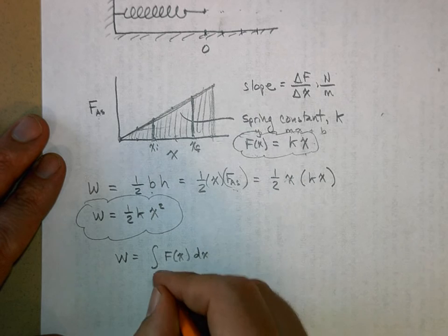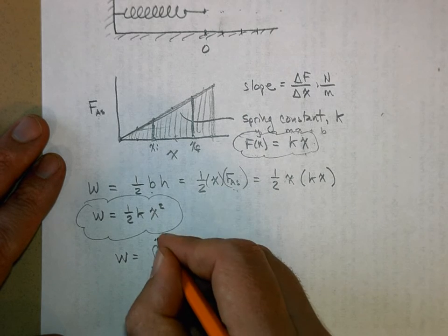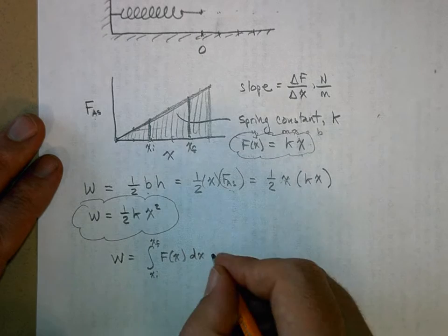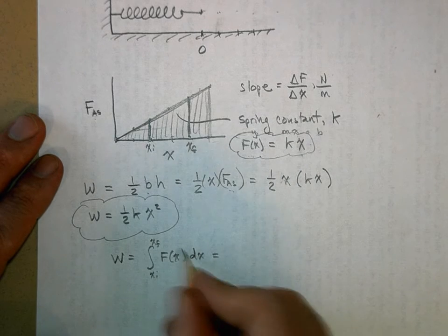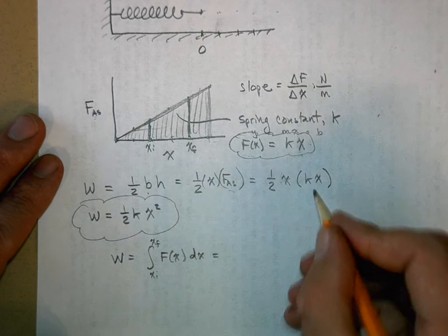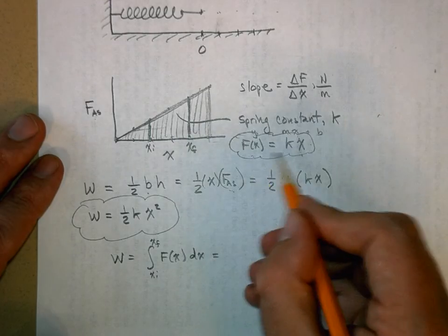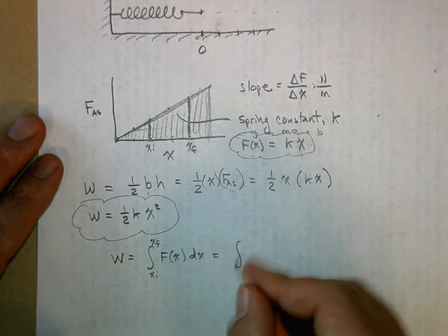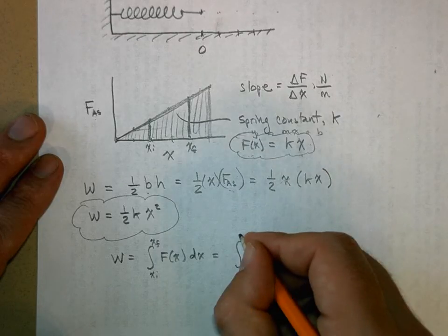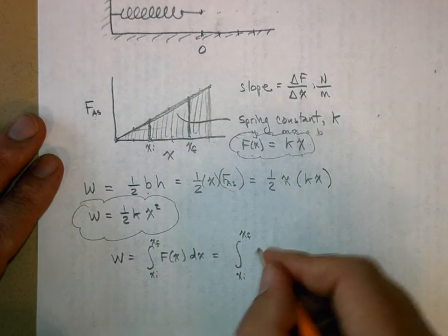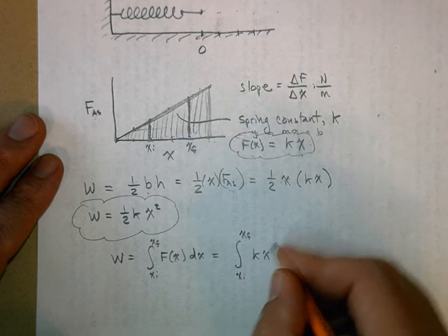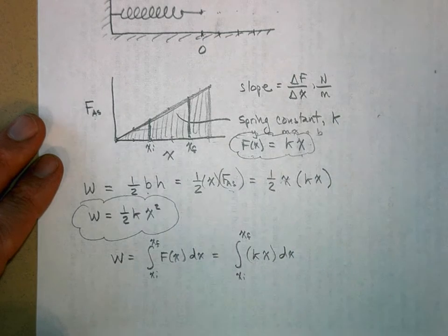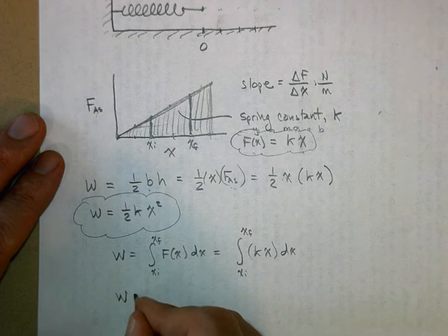Now let's apply this. What's our force as a function of x? Well, force of x equals kx. So we're going to put the integral from x initial to x final as being kx times dx. Well, this is one of the easiest integrals you can get.